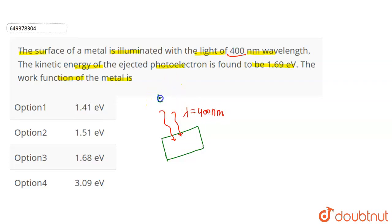Here we have the incident photon with energy E. We have the ejected electron with kinetic energy. This is the maximum kinetic energy of the electron, which is 1.69 electron volts.